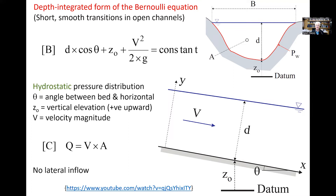This expression of the Bernoulli equation that we commonly use assumes implicitly hydrostatic pressure. And of course, we will combine the Bernoulli principle with the continuity equation, which states that Q, the total discharge, equals v times A, A being the cross-section area. This equation is valid in the absence of lateral inflow.